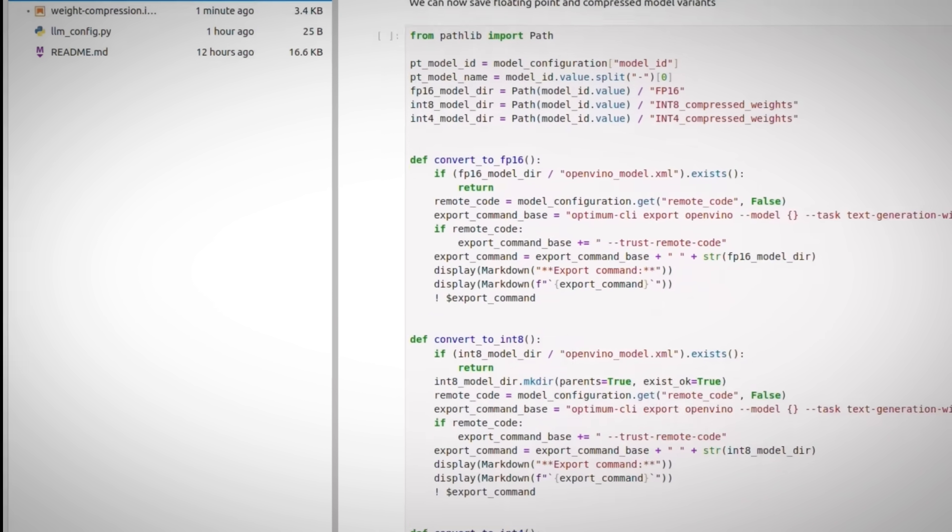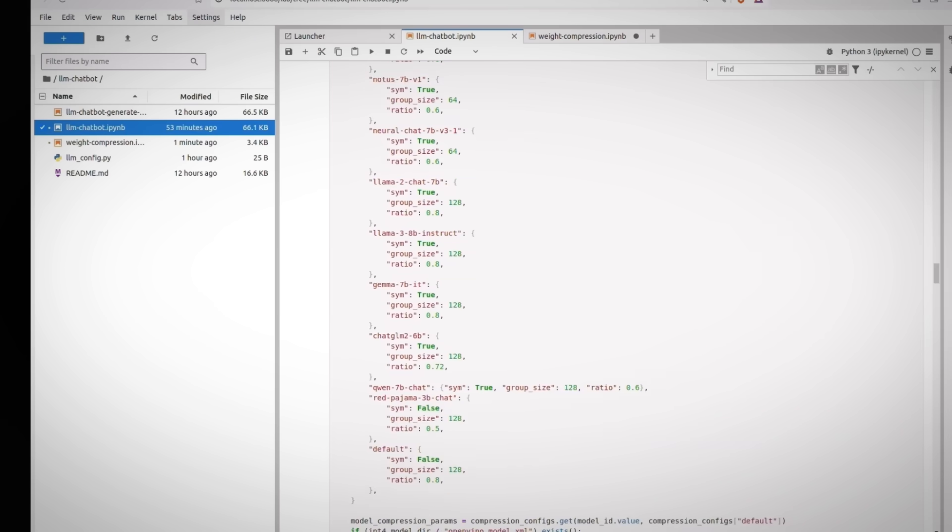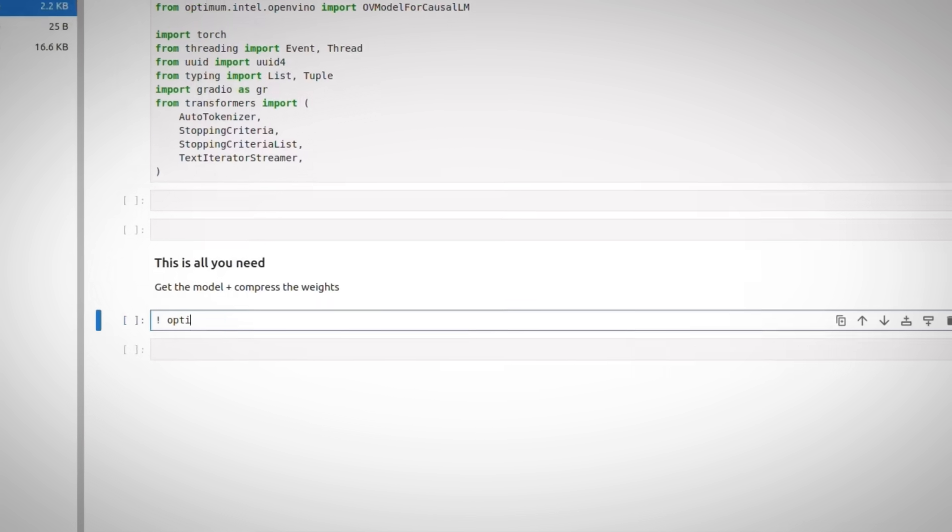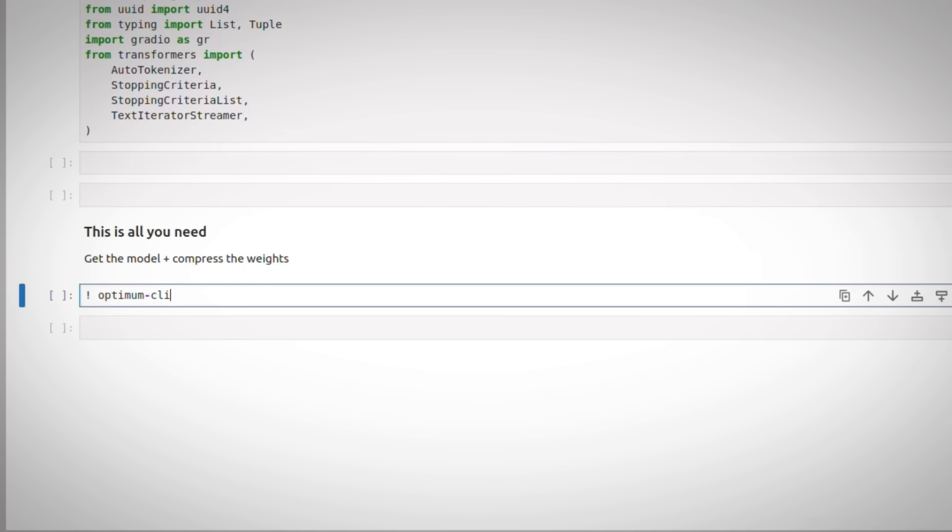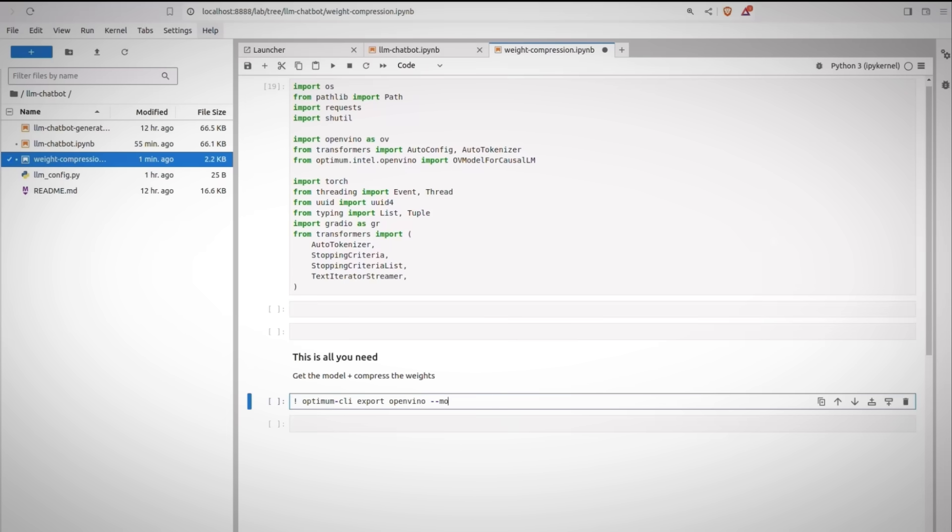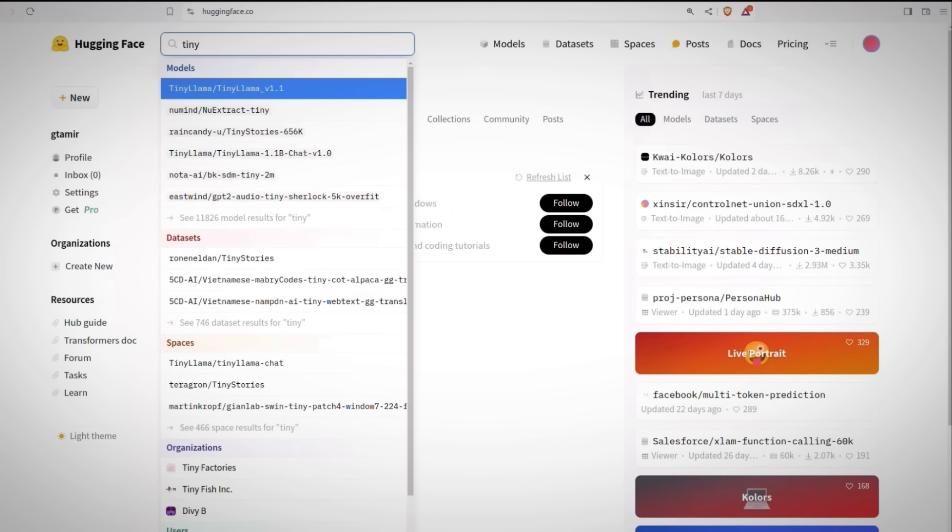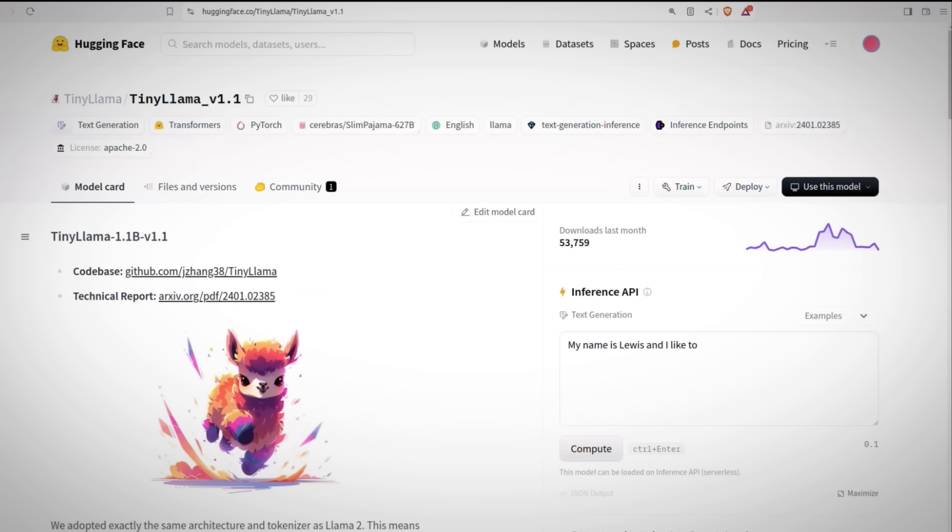So in this notebook, I just copied all the libraries. You do not need even that. And I'm using optimum CLI to export the model to OpenVINO format. Let's choose a small model. You can choose anyone you like. Hugging Face, tiny llama. Make sure you have all the permissions to download the model.